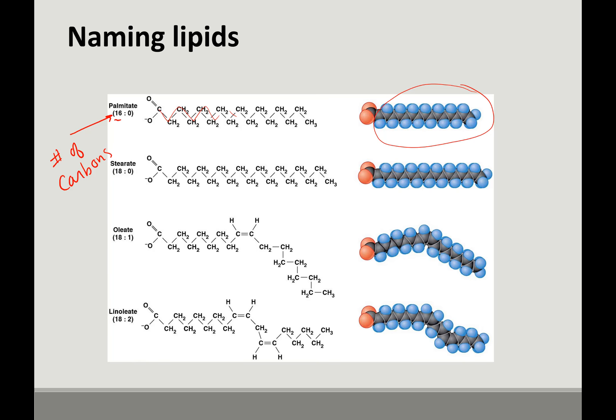So palmate has 16 carbons. And the zero is the number of carbon-carbon double bonds. So palmate has no double bonds. And so that actually makes this nice straight fatty acid tail. Sterate is slightly different. It's a little bit longer. It has 18 carbons. No double bonds. So it is also a nice straight fatty acid tail.